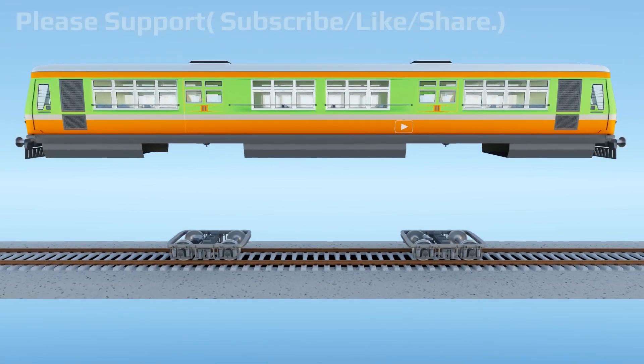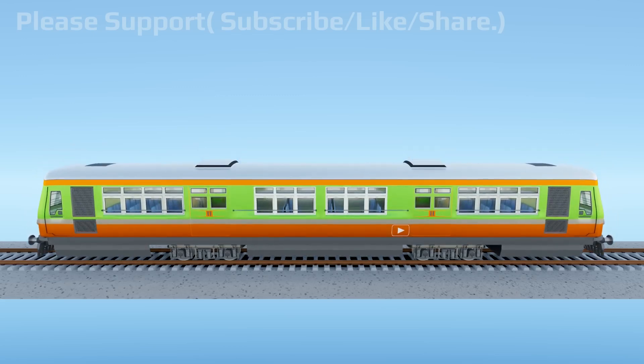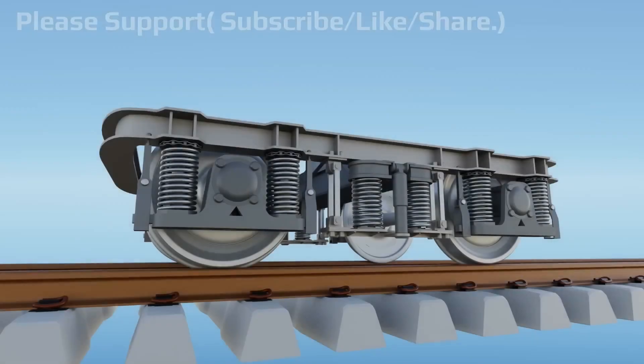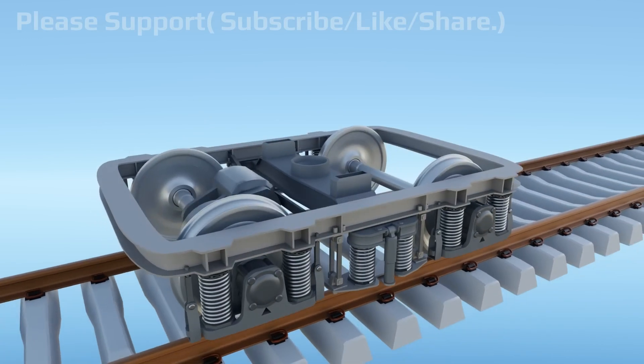This is a train coach and two bogeys. The coach is fitted on the bogey frames. Wheel sets are connected with the bogey using bearings, thus train weight is supported by the wheels.